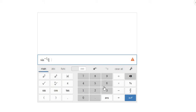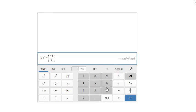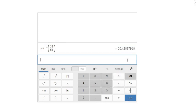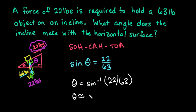And then I'll go back to my keypad and type in 22 divided by 63. When you hit enter, you can see that it's 20.4. I already knew my calculator was in degree mode, but do make sure that you are in degree mode, because if you are in radian mode, it gives you a very different answer. So we can say it's approximately 20.4 degrees.